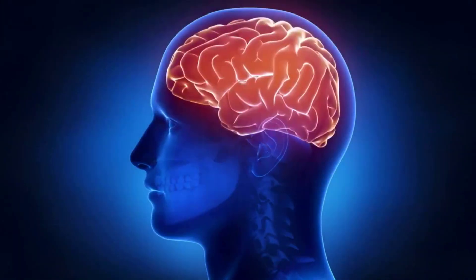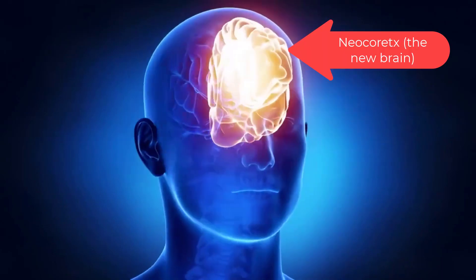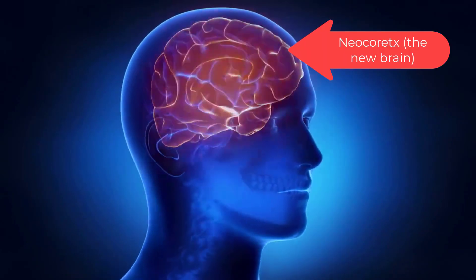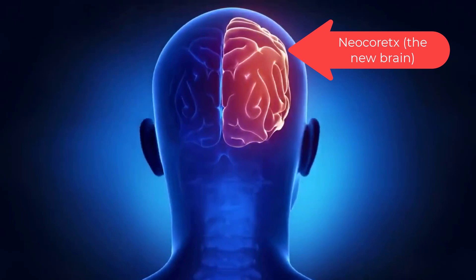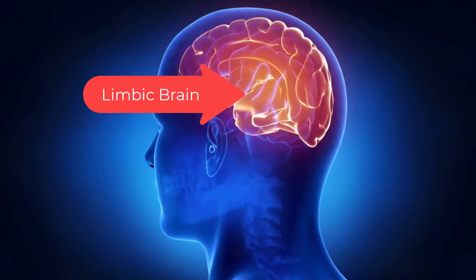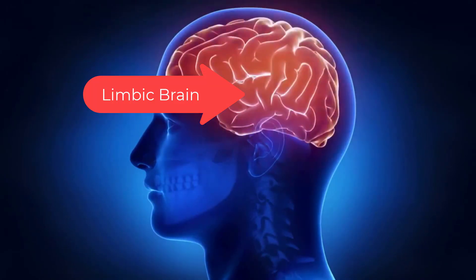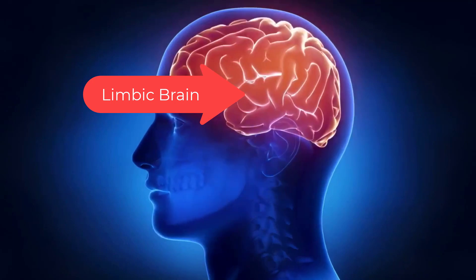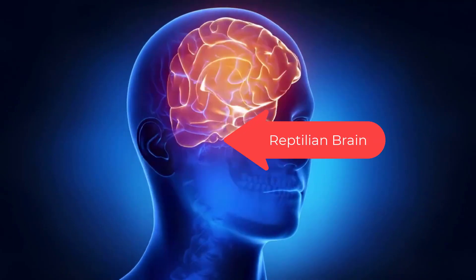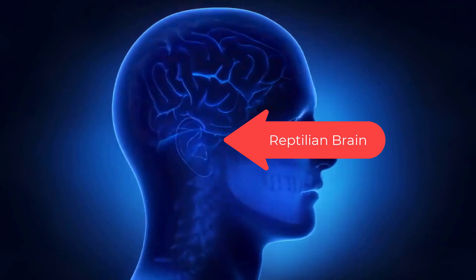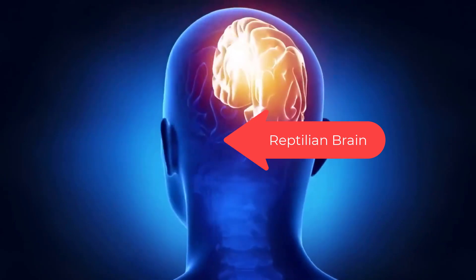Your brain has three basic layers and only one real decision maker. The new brain, the neocortex — it thinks and processes rational data. The middle brain, the limbic brain — it feels emotions and is our instinct for fight or flight response. The old brain, the reptilian brain — it decides.